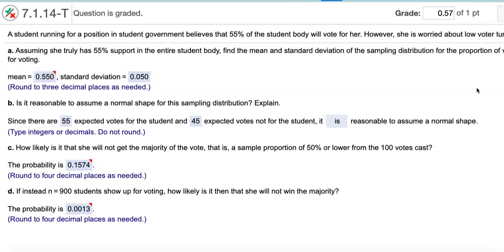Assuming she truly believes 55 percent supports the entire student body, that 55% now is the true population proportion. So write down P equals 0.55.